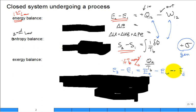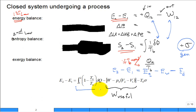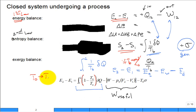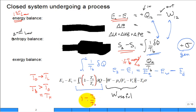The exergy transfer with heat looks like the integral from 1 to 2 of (1 minus T-naught over T_B) times delta-Q. Notice that (1 minus T_L over T_H) is the Carnot efficiency from thermodynamics one — the maximum efficiency of a heat engine. The exergy transfer with work is the total work minus a non-useful component: p-naught times the change in volume, which is just the work done pushing back the atmosphere. That leaves the useful work, which is one-to-one with exergy transfer.